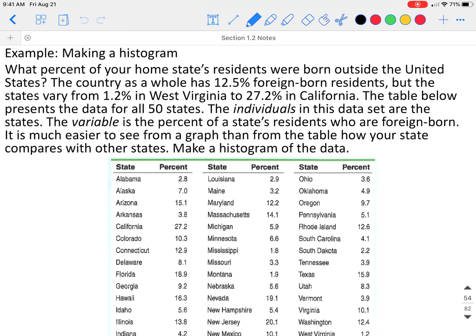What percent of your home state's residents were born outside the United States? The country as a whole has 12.5% foreign-born residents, but the states vary from 1.2% in West Virginia to 27.2% in California. The table below presents the data for all 50 states. The individuals in this data set are the states. The variable is the percent of the state's residents who are foreign-born.